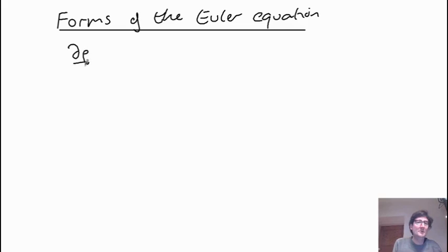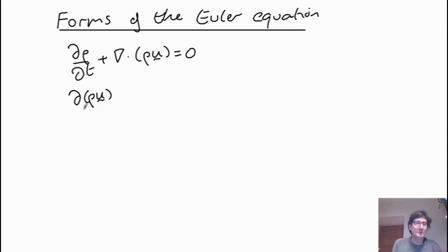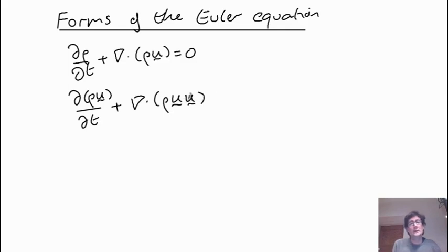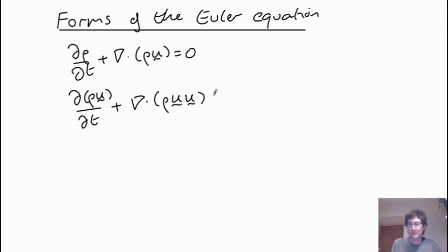The equations we ended up with are: an equation for the mass density rho — we have the divergence of rho u equal to zero, where rho is the mass density and u is the flow velocity. Then the momentum equation for rho u, the momentum density, where we have a divergence of the momentum flux rho u times u. This represents three equations, one for each component of momentum — rho u_x advected by the fluid motion in x, y, or z — and this equals the gradient of pressure p.